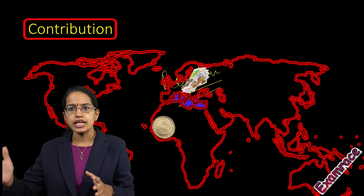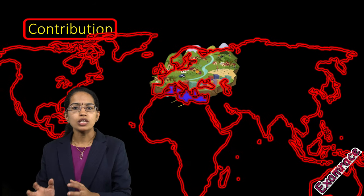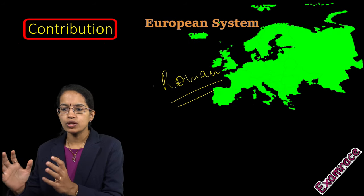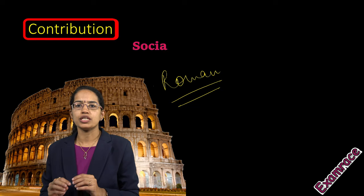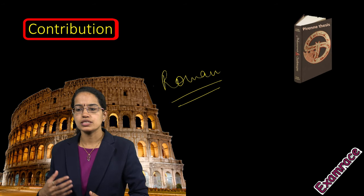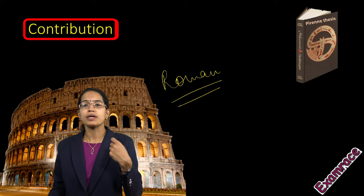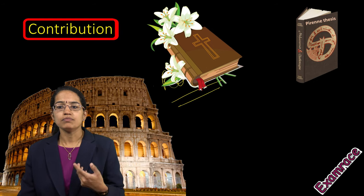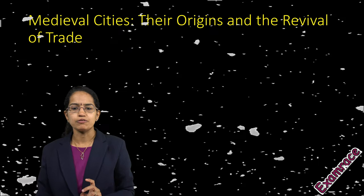During that time, Europe was witnessing the rise of Islam, and it was not just the invasions that were part of the European system. This whole idea was explained in his article 'The Stages in the Social History of Capitalism,' written in 1914. This thesis formed the basis for many further works which believe that culture, religion, and politics played a very important role in the establishment of a town or city.